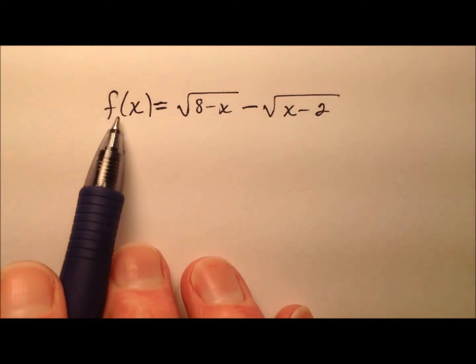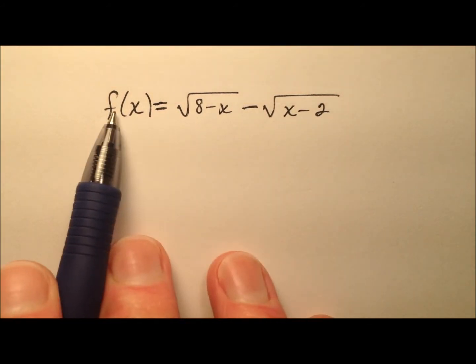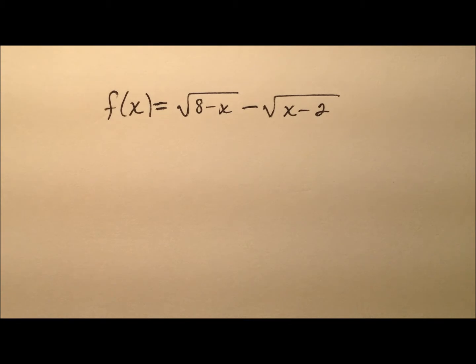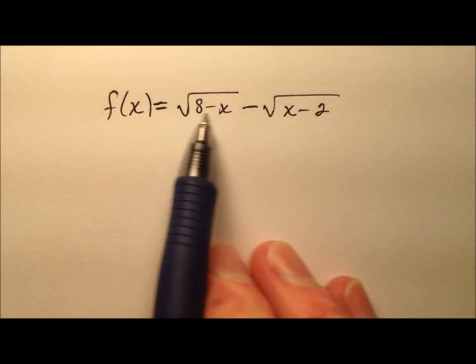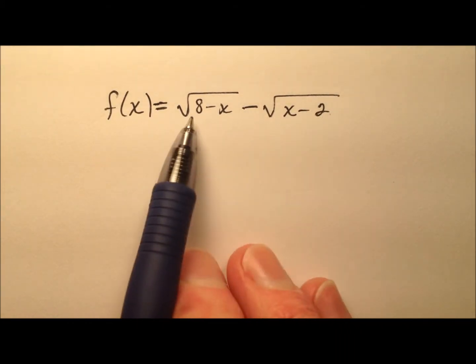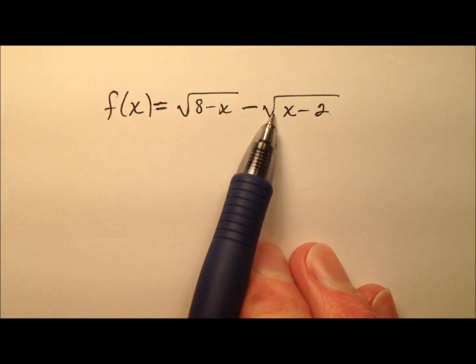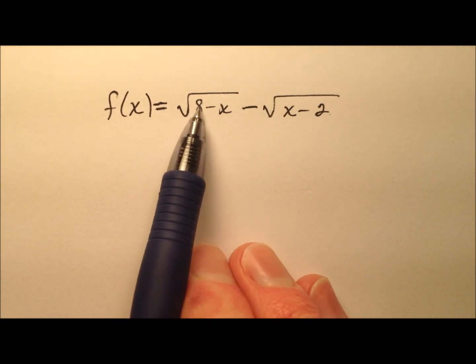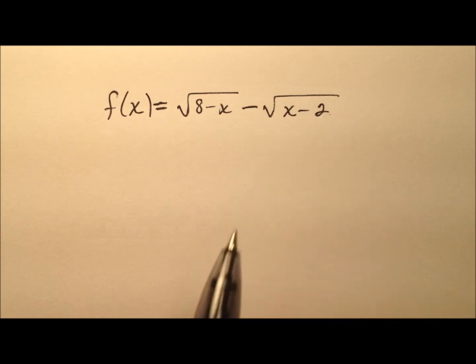In this example, we're going to take a look at this radical function f of x and we're going to determine its domain. So when we look at this function definition, we have a couple of different radical expressions. So it's the square root of 8 minus x and the square root of x minus 2.